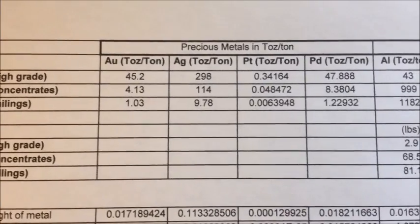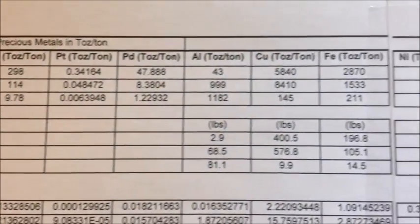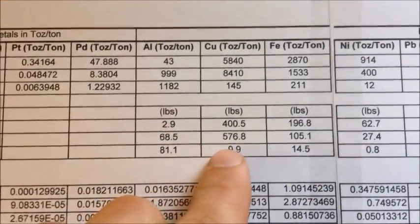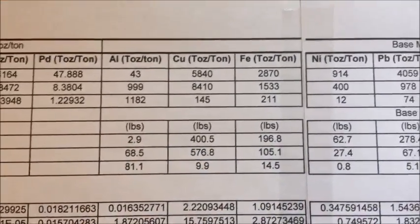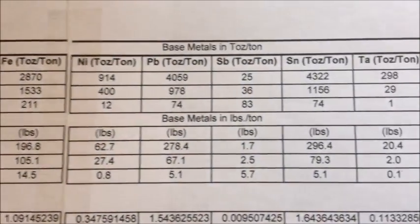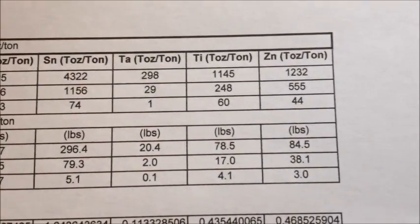The list is there on the top. Going from left to right is gold, silver, platinum, palladium, and then aluminum. And down here is in pounds as well. So aluminum, copper, iron, nickel, lead, antimony, tin, tantalum, titanium, and zinc.